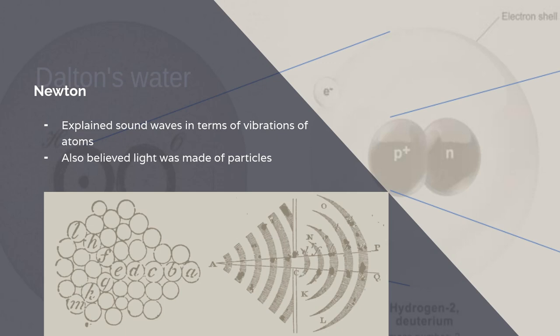And Newton also believed that light was made of particles. Now, you'll all have been told that this atomistic theory of light lost ground to Huygens' wave theory.